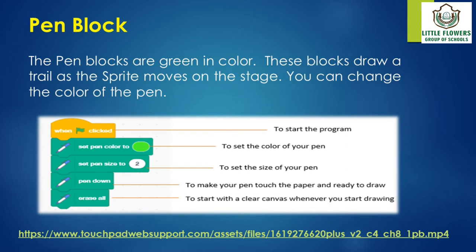Pen blocks are green in color. These blocks draw a trail as the sprite moves on the stage. You can change the color of the pen. In Scratch 3.0, you have to add pen blocks to the block category. To do so, follow the given steps. Step 1: click on the Add Extension button at the bottom left corner of the code tab.